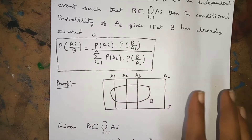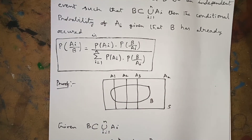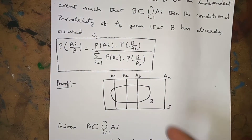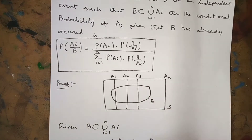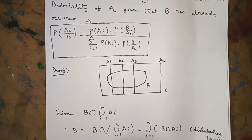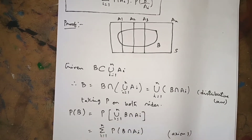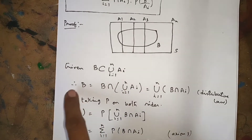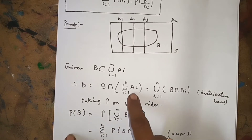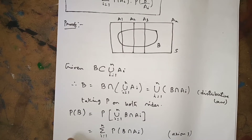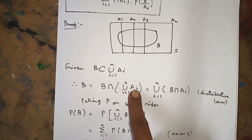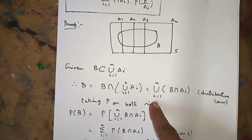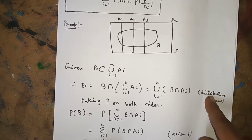Since B ⊆ ∪ᵢ₌₁ⁿ Aᵢ, from the diagram we can write B = B ∩ (∪ᵢ₌₁ⁿ Aᵢ). Using the distributive law, this equals ∪ᵢ₌₁ⁿ (B ∩ Aᵢ). Taking P on both sides: P(B) = P(∪ᵢ₌₁ⁿ (B ∩ Aᵢ)).